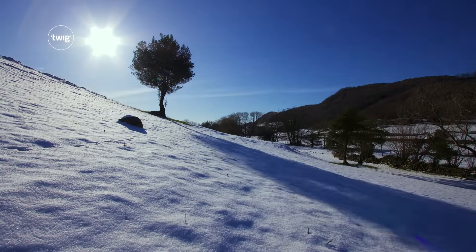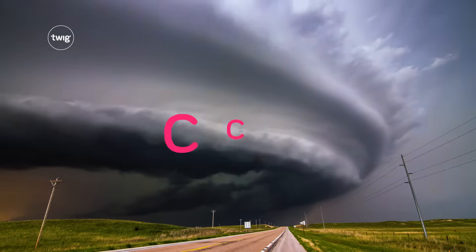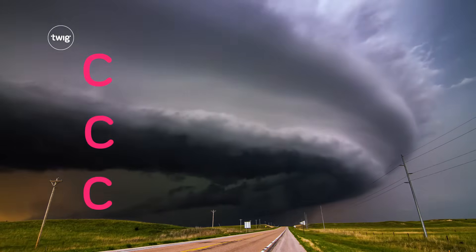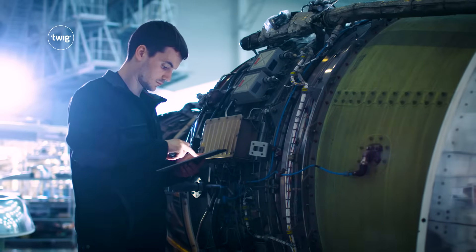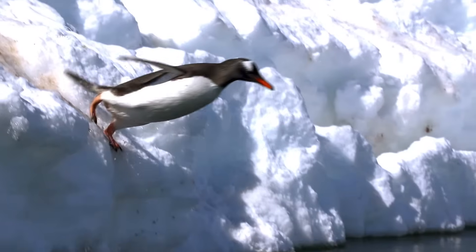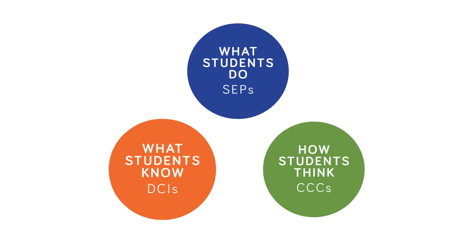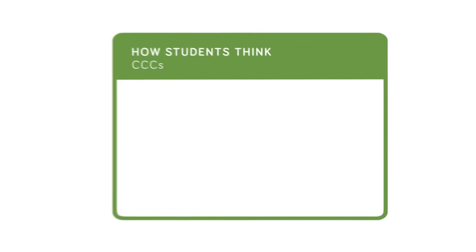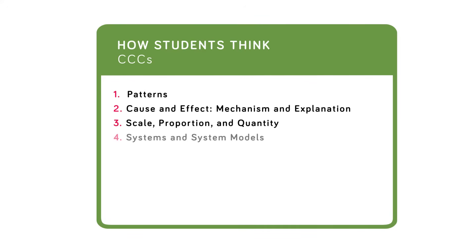Mastering just a few concepts can prepare students for a lifetime of STEM investigation. Cross-cutting concepts, or CCCs, make up one of the three dimensions of 3D learning. CCCs are ideas that appear again and again across STEM subjects in many different forms. Because of this, they are crucial to building content knowledge and understanding scientific processes.